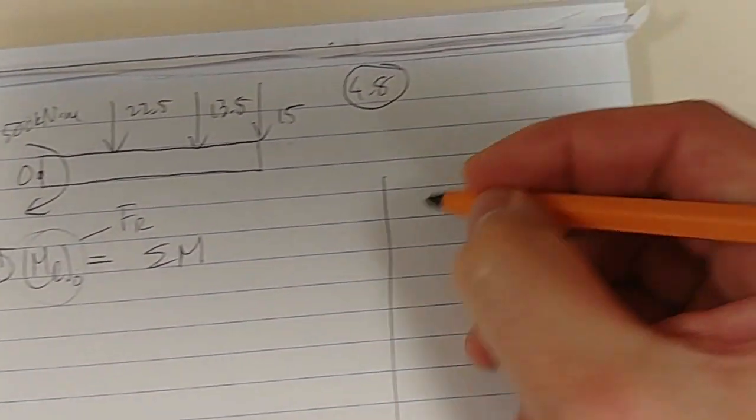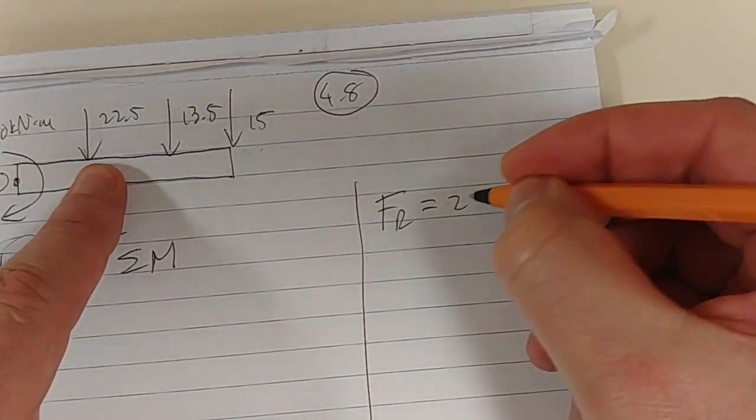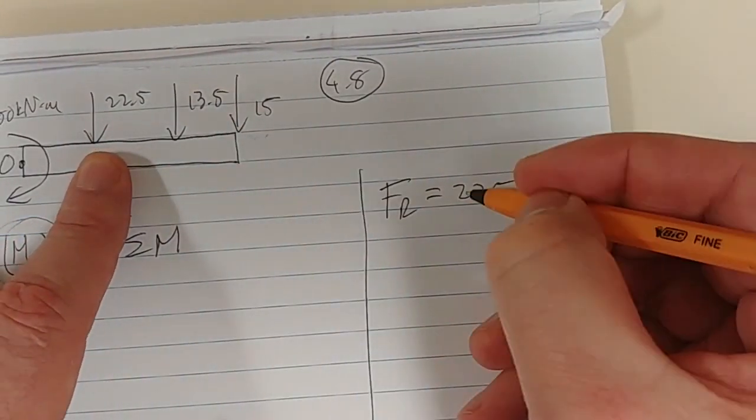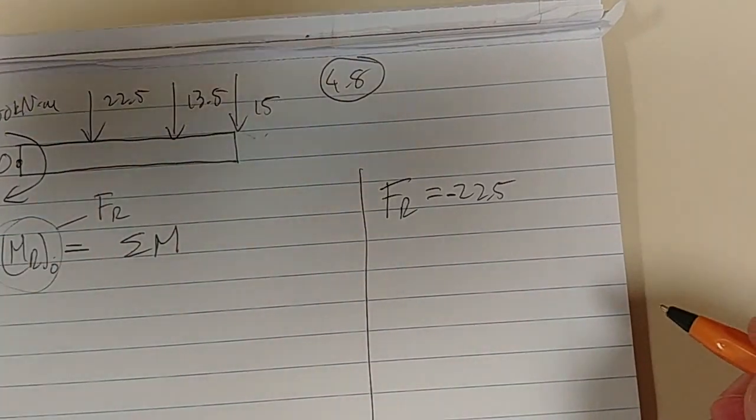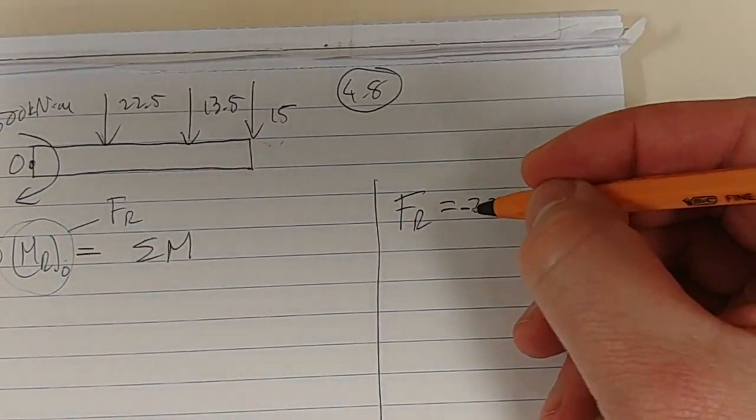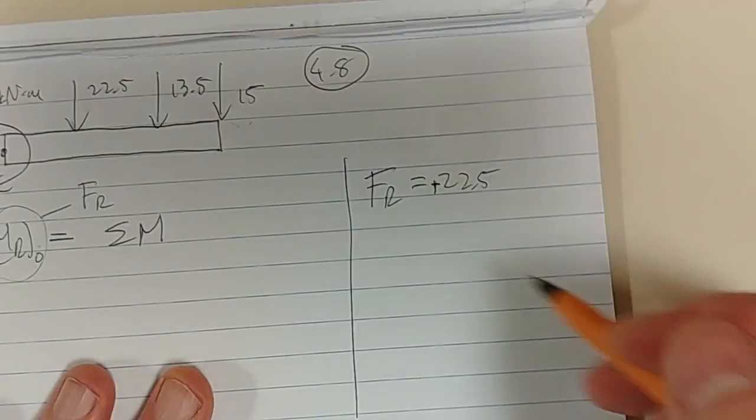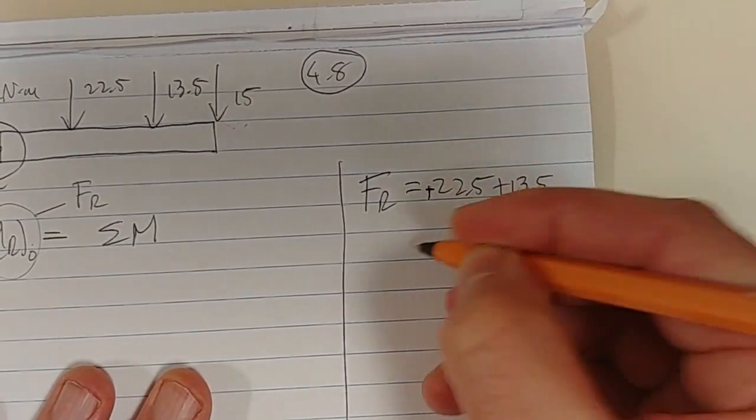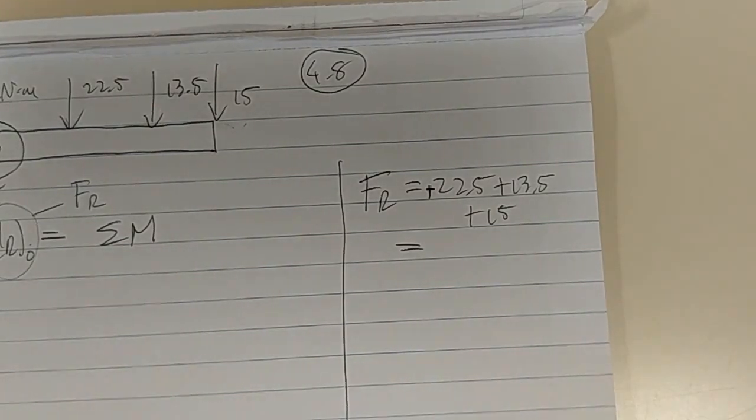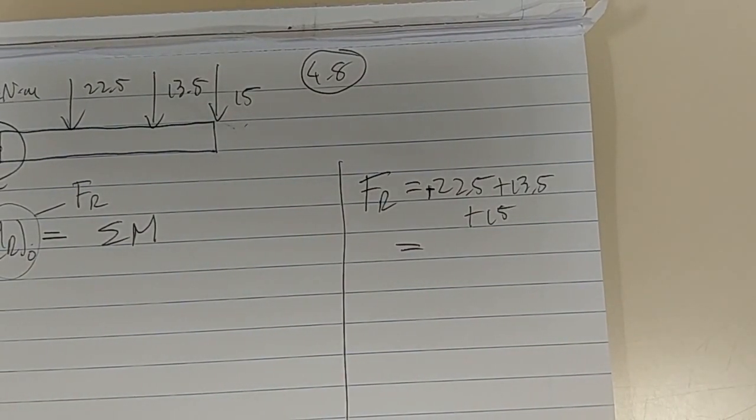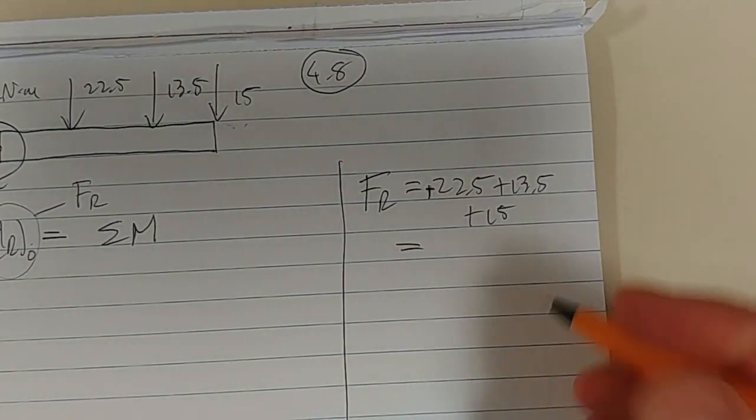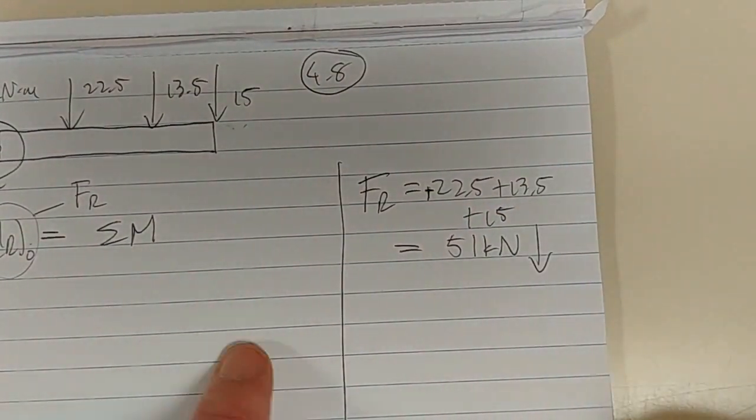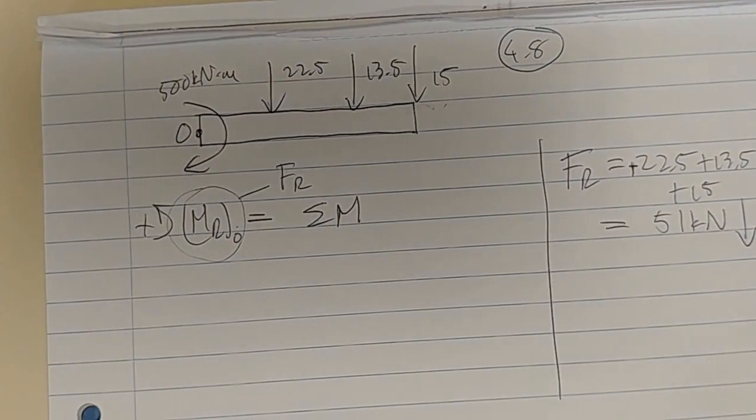What is our total resultant force? Let's calculate it. I'm just going to add it up. They're all going in the same direction. 22.5 plus 13.5 plus 15 equals 51 kilonewton, and it's acting down. They're all acting down.